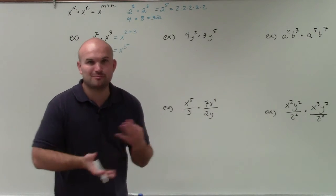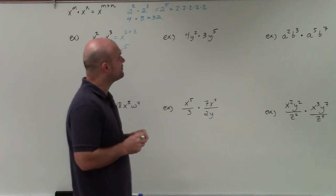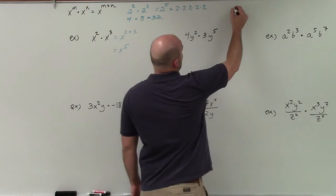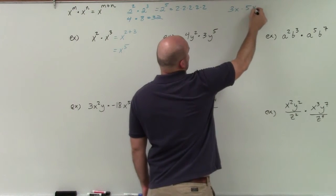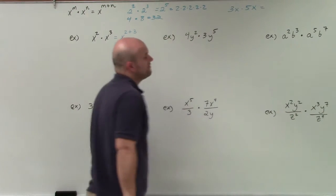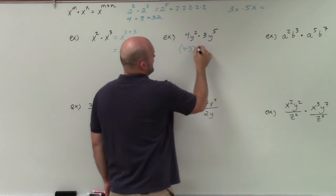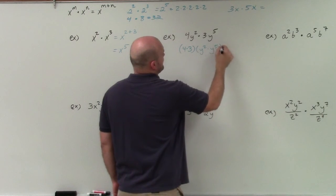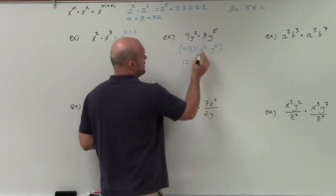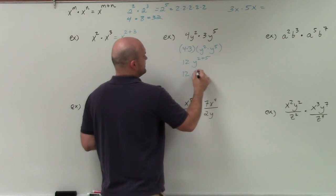You just add the powers as long as the base is the same. Now I want to add one where we have some numbers in front, and that causes a little bit of an issue. But remember, when we do something like 3x times 5x, we multiply the numbers separately and then multiply the variables. So I'm going to multiply 4 times 3 separately, and then do y squared times y to the fifth. So 4 times 3 is 12, and y squared times y to the fifth is y to the 2 plus 5, which equals 12y to the seventh.